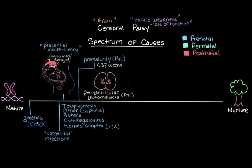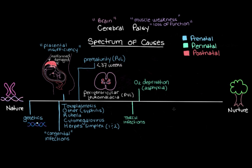In the perinatal period — during the birth process — if mom has one of the TORCH infections, she might pass it to her baby as it comes through the birth canal. So TORCH infections are also a perinatal cause of cerebral palsy. A second perinatal event is oxygen deprivation, or birth asphyxia, which happens when something gets in the way of the baby's ability to breathe — for example, if the umbilical cord gets caught around the baby's neck. We used to think birth complications causing oxygen loss were the main cause of CP, but we now know this accounts for fewer than about 10% of cases, and the majority actually happen during the prenatal period.